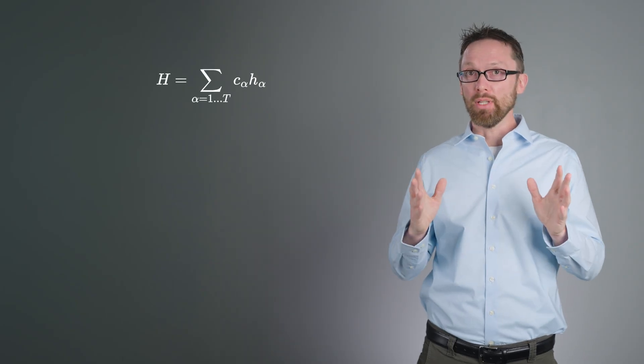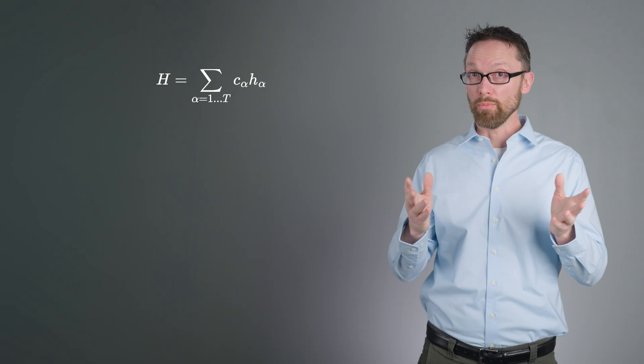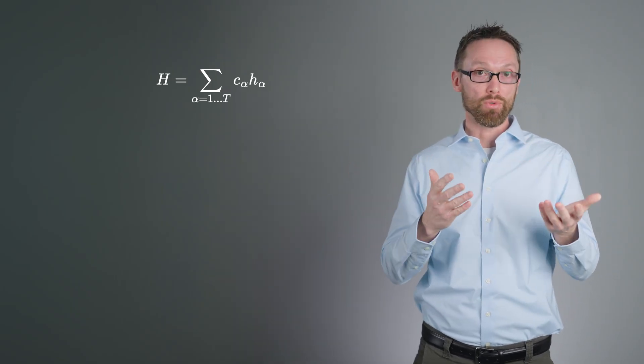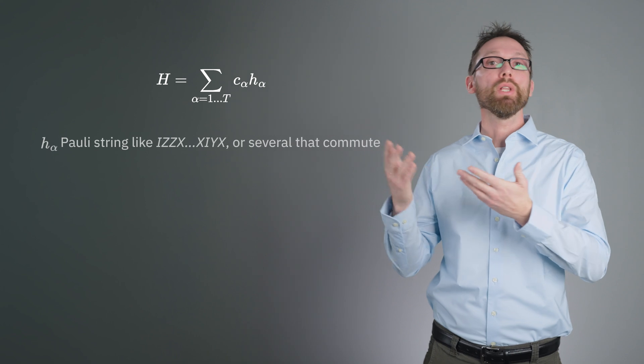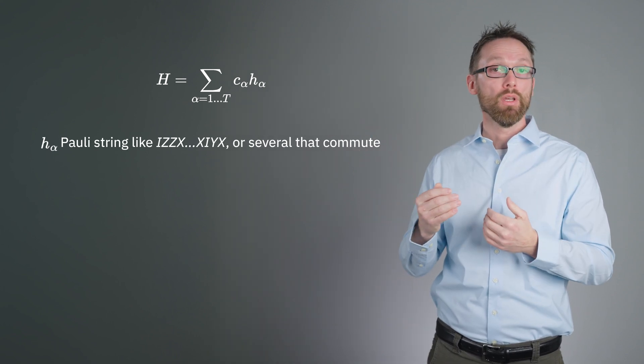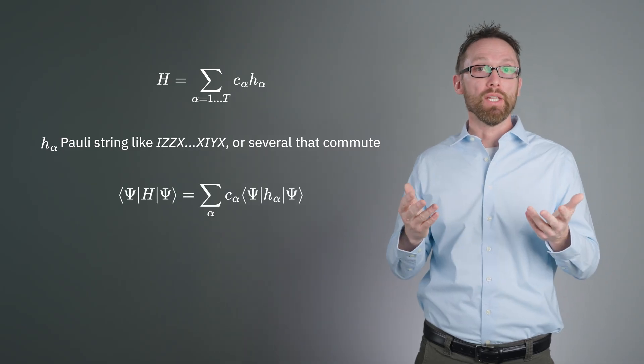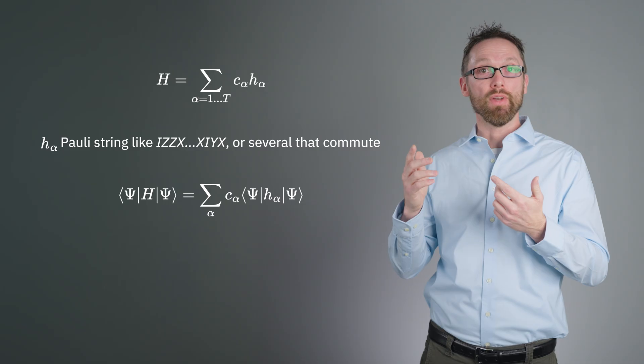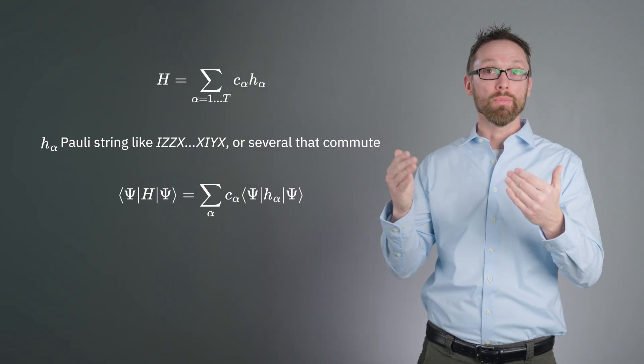H is generally not easy to measure. For example, it could be made up of many non-commuting Pauli X, Y, and Z operators. But H can be written as a linear combination of terms, H_α, each of which is easily measurable. For example, Pauli operators or groups of bitwise commuting Pauli operators. The expectation value of H over the state ψ is the weighted sum of expectation values of the constituent terms, H_α.